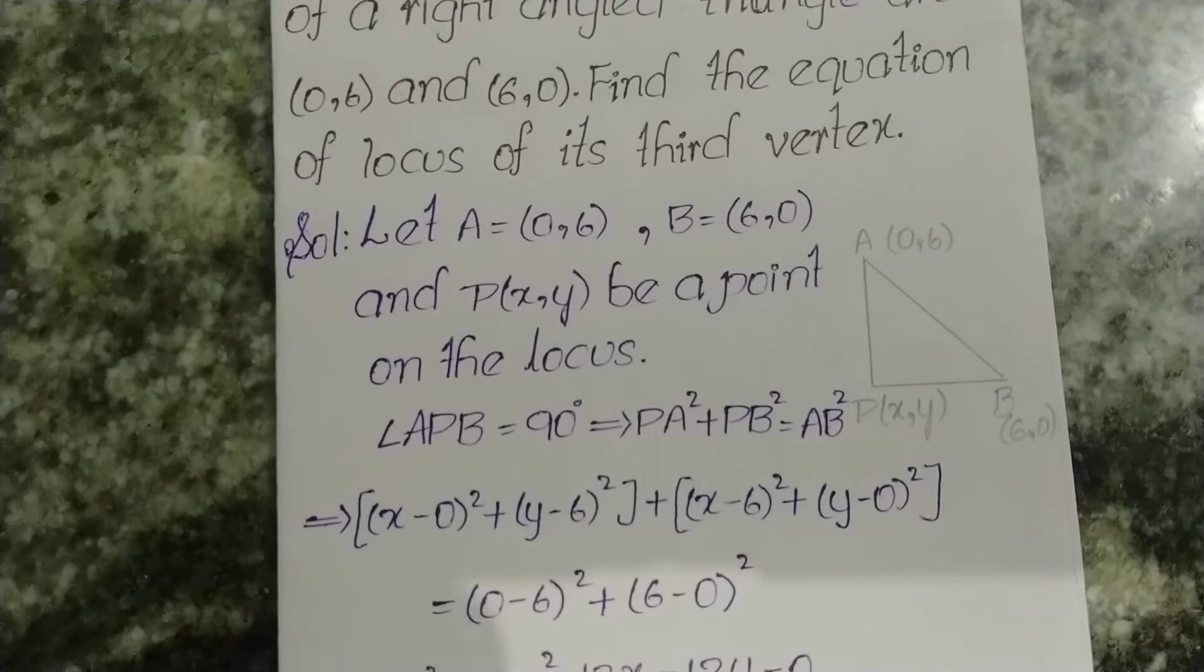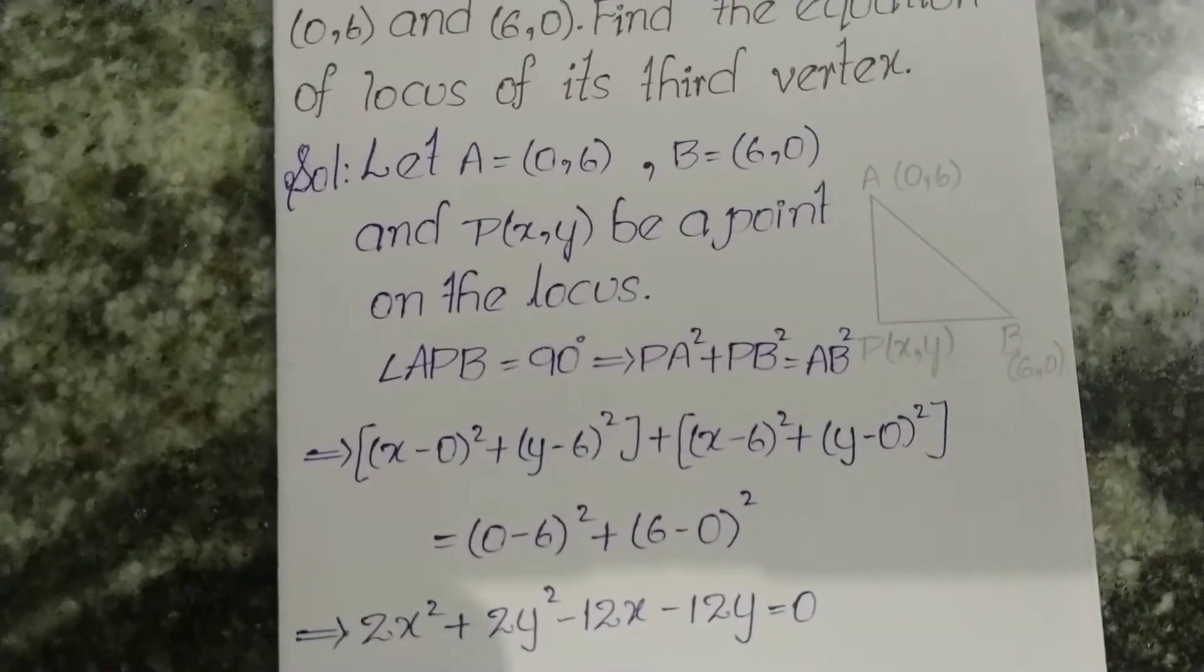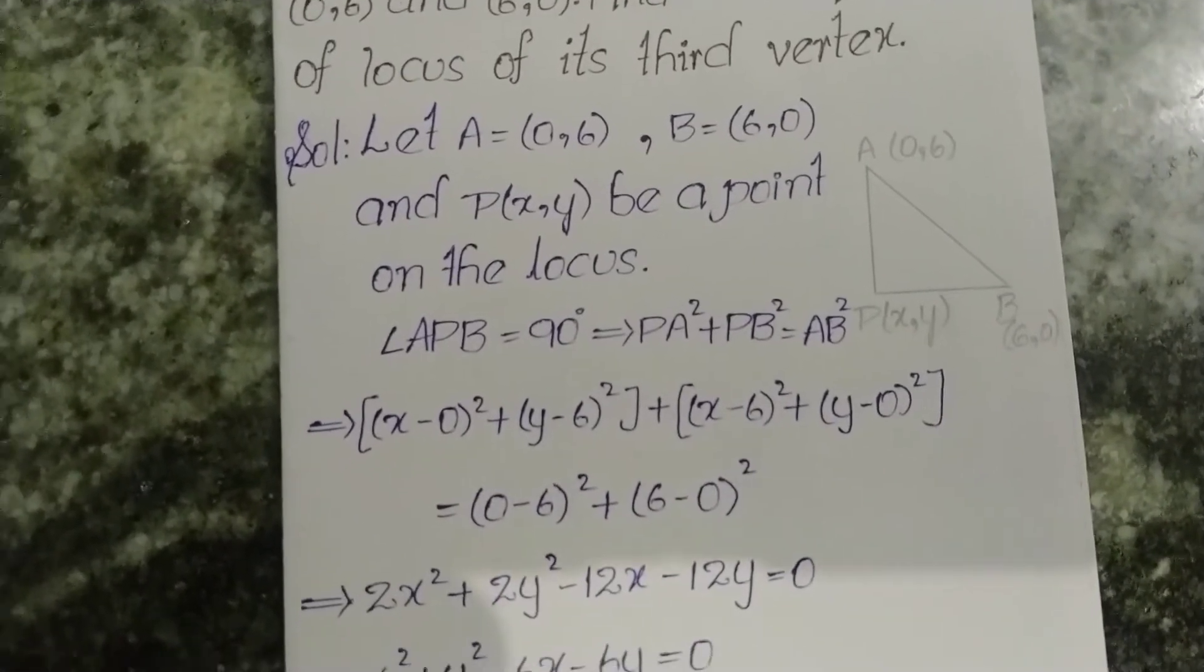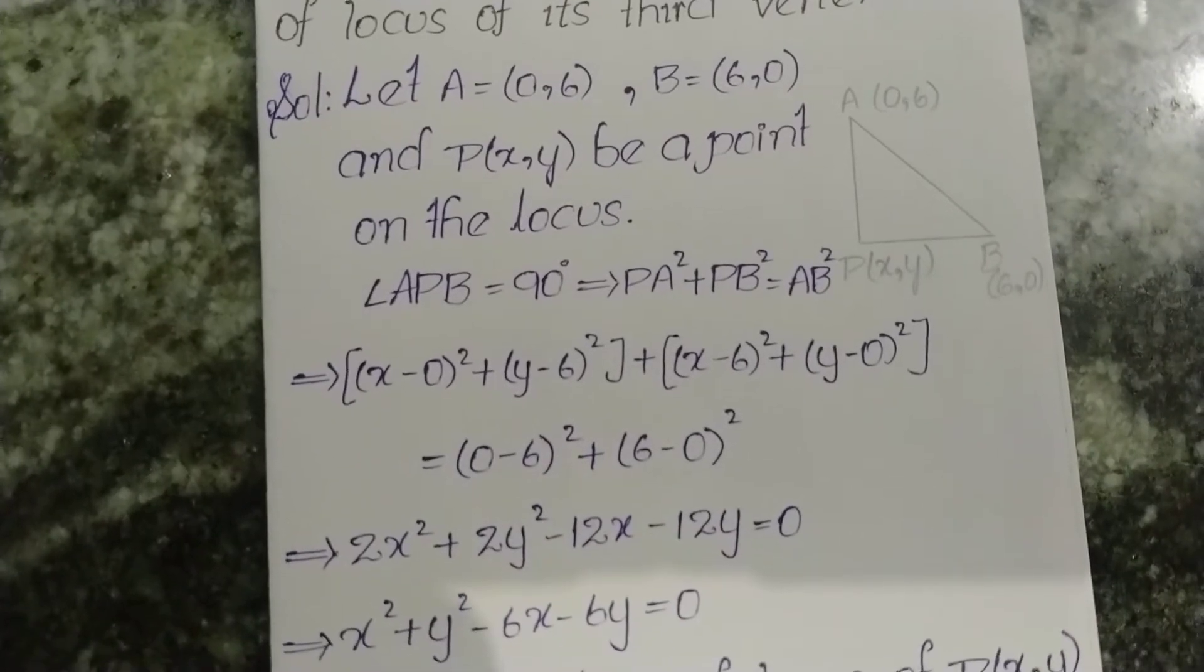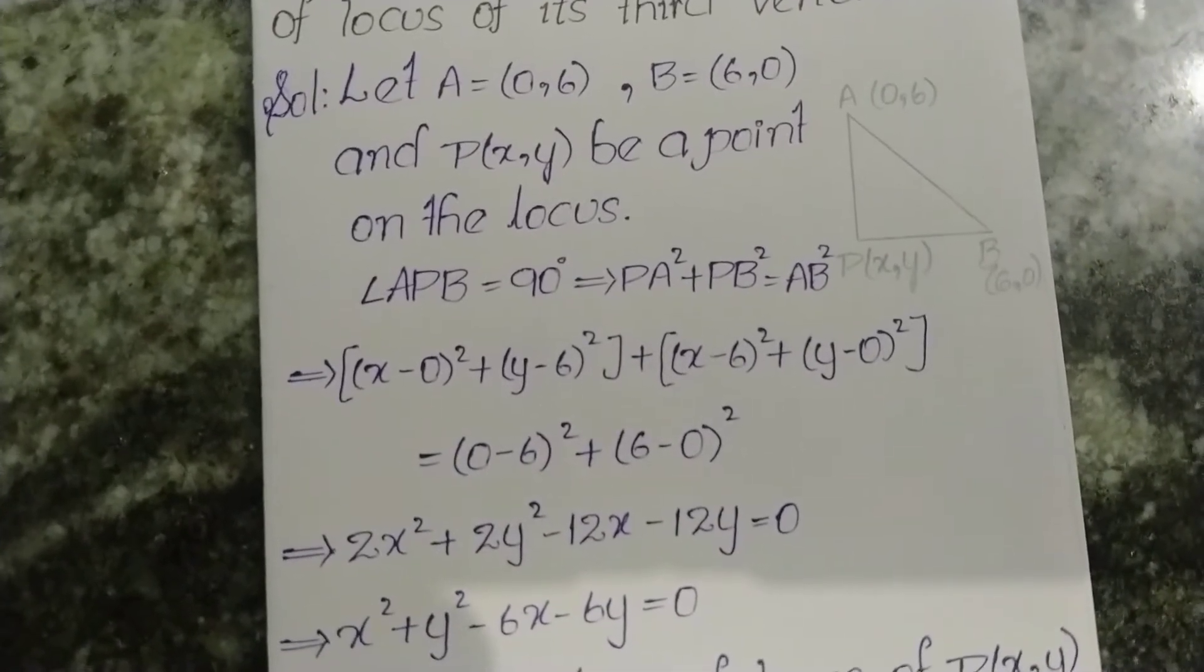This is the right angle. According to Pythagoras theorem, PA² + PB² = AB². Now the distance between two points is root of (x2 - x1)² plus (y2 - y1)².